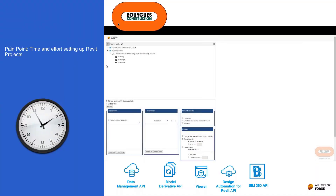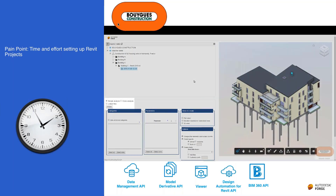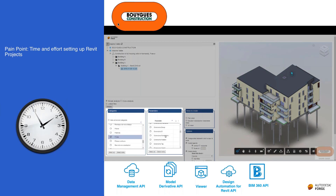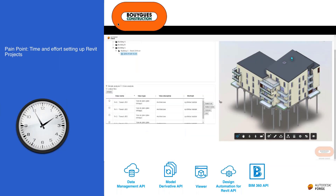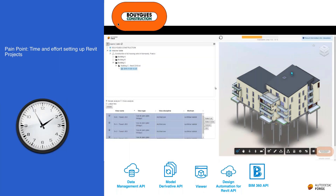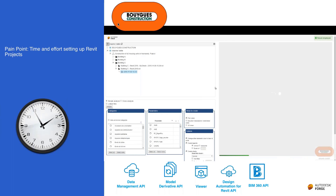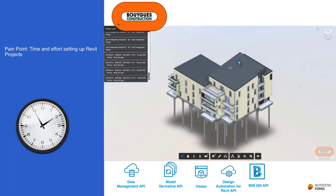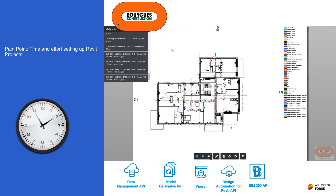A simple example: a French construction company using Revit for project initialization. They have a template building design with five or six projects with slightly different configurations. Using Design Automation for Revit, they created a simple web page where they took the template, tweaked a few parameters, and sent it as a batch job to produce a new version of the building with a different number of floors — producing Revit assets for their project teams.